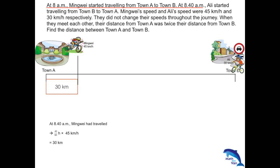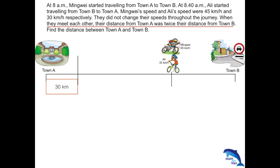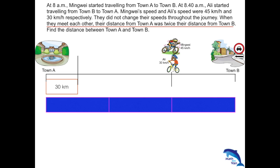From this point onwards, Ali started and Mingwei continued his journey until they met each other. We were told that when they met, the distance from town A was twice the distance from town B. So if I call the distance from town B one part, then the distance from town A would be two parts.